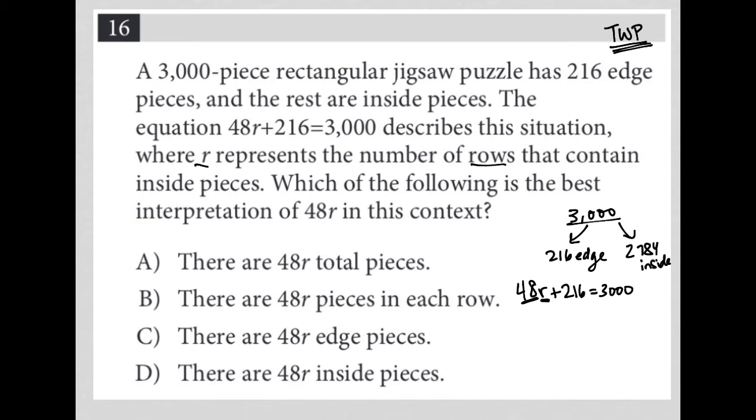There are 48R total pieces. Well, that can't be it because if that were it, the equation would just be 48R equals 3,000. Because we know there are 3,000 total pieces. So that's gone.